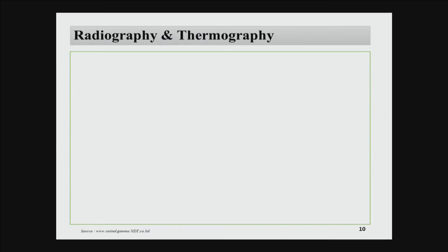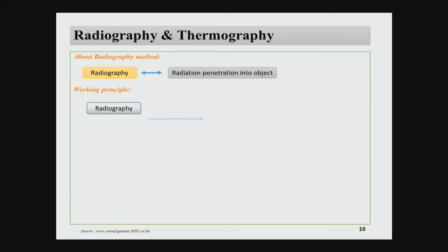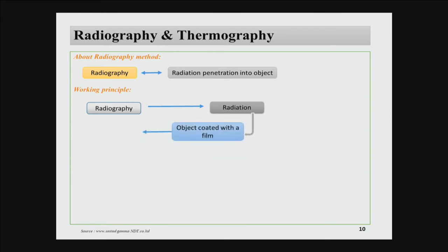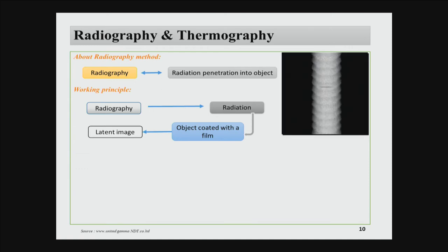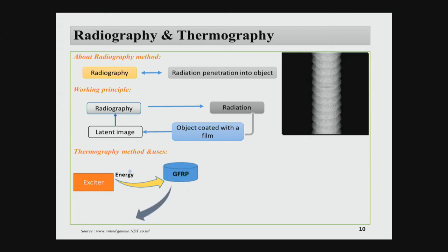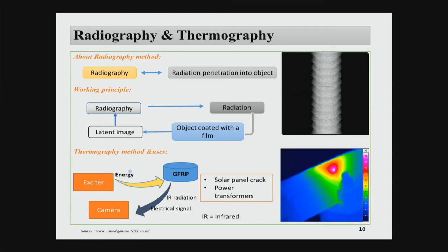Radiography and thermography methods are widely used, mainly in the medical industry. Radiography works on the principle of radiation — X-rays are passed through a material and the image is captured on film, so you can understand where cracks are. Thermography works by sending thermal energy from an exciter into a composite, which returns as a thermal image. We use this in everyday activities, for example in forest fire analysis to understand where the maximum temperature is and identify regions needing help.